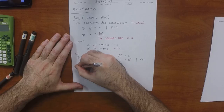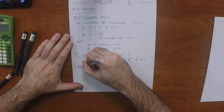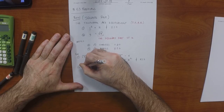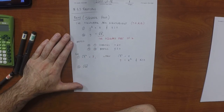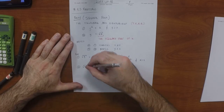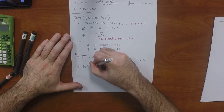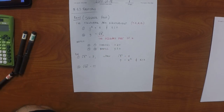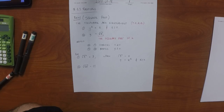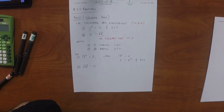What's the square root of 121? Eleven — because if you carry out 11 times 11, you get 121.